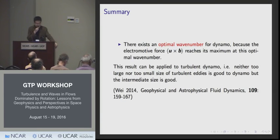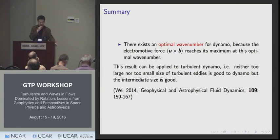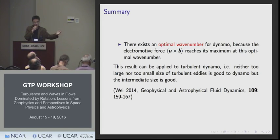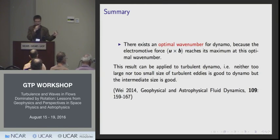Summary: there exists an optimal wave number for dynamo because EMF reaches its maximum there. This result can be applied to turbulent dynamo — neither too large nor too small turbulent eddies are good for dynamo; intermediate size is optimal, and the optimal size can be estimated by plugging in the magnetic Reynolds number and the frequency.